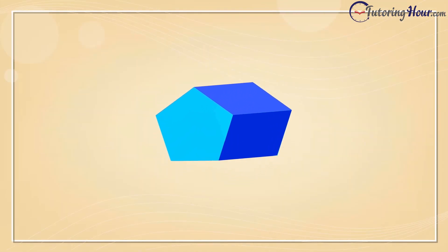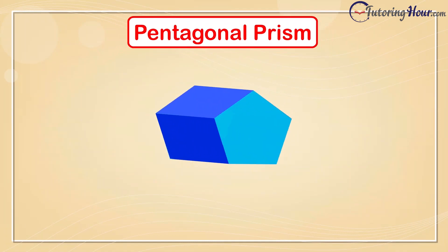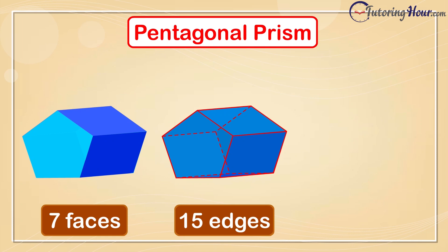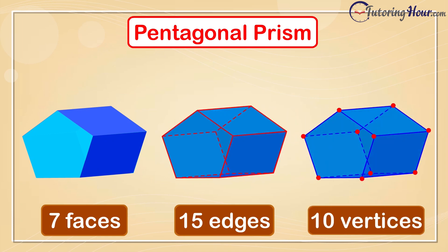Coming up next is another solid shape, the pentagonal prism. It has 7 faces. A pentagonal prism has 15 edges. It has 10 vertices.